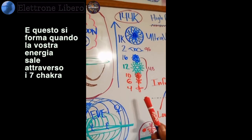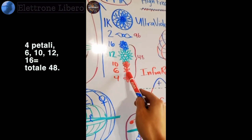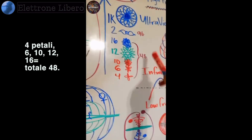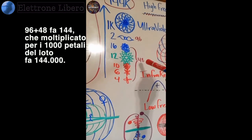And this is made when your energy goes all the way up your seven chakras. Four petals, six, ten, twelve, sixteen equals forty-eight, times two is ninety-six. Ninety-six plus forty-eight is a hundred and forty-four.